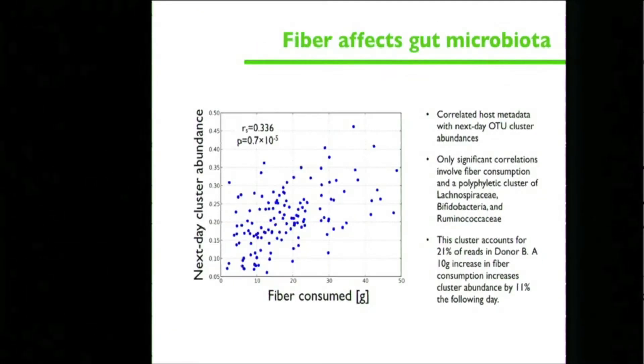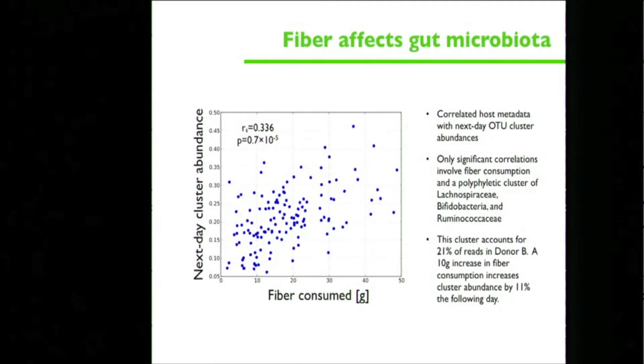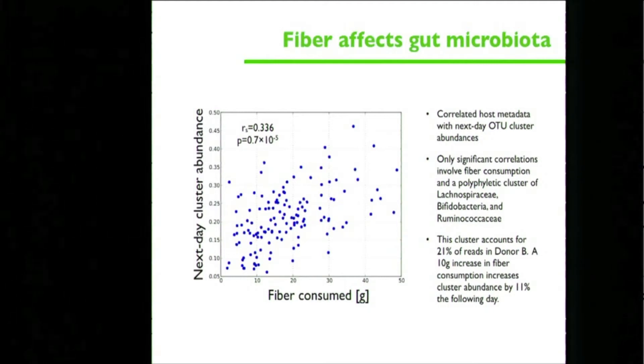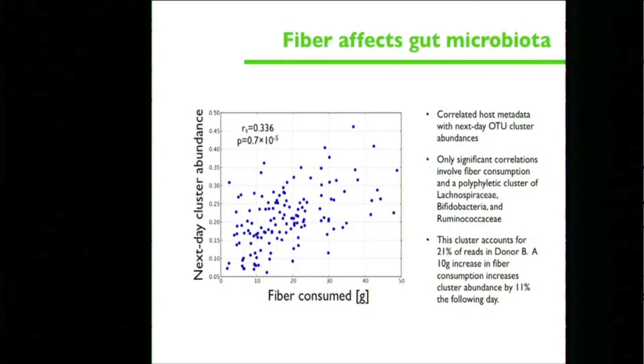Which of the factors that we took all this time to measure actually mattered? It turns out that some dietary factors did matter, many fewer than we expected. The biggest signal was for fiber. So the fiber you ate yesterday affects this cluster of three different bacteria—how much is in your gut today. But actually, all together these bacteria comprise a very small portion of the microbiome, so they really don't explain a whole lot of the day-to-day variation that we see. But you can detect the signal.